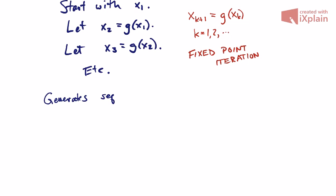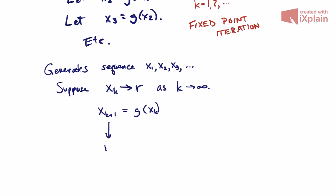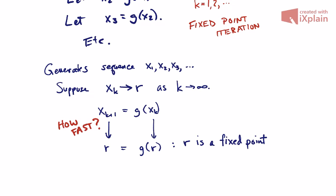The fixed-point iteration generates not just a number, but a sequence. We want this sequence to converge. If the sequence converges to some limit r as k goes to infinity, then you write down the defining equation of the iteration, let k go to infinity on both sides, and you get the fixed-point condition right back. So if the sequence has a limit, it will be a fixed point.